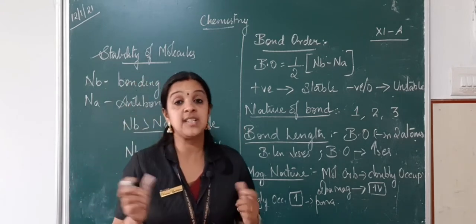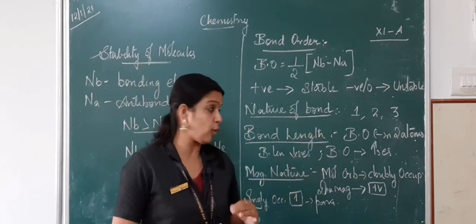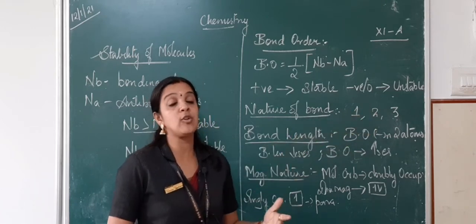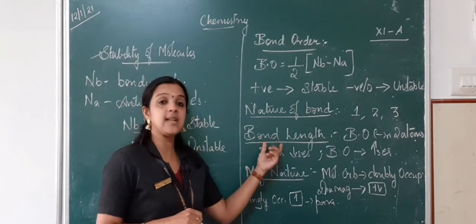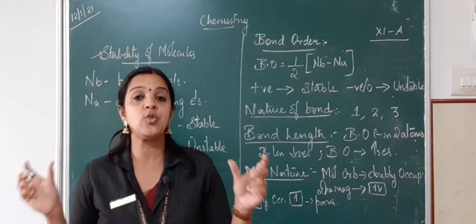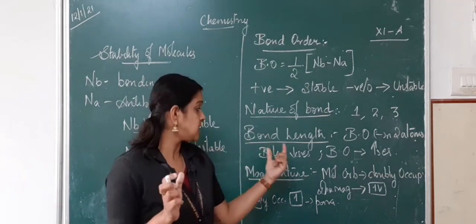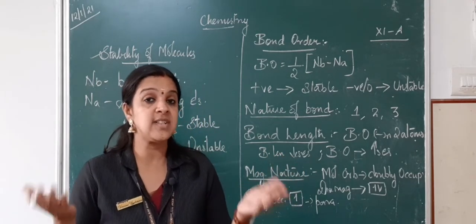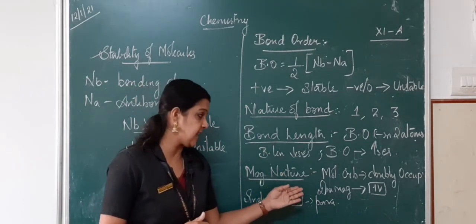Once we find the bond order, we should find out the nature of the bond — whether the given molecule has a single bond, a double bond, or a triple bond. If the bond order comes to be 1, 2, or 3, we find out how many bonds are present between the two atoms. Bond length is inversely proportional to bond order — as bond order increases, bond length decreases.